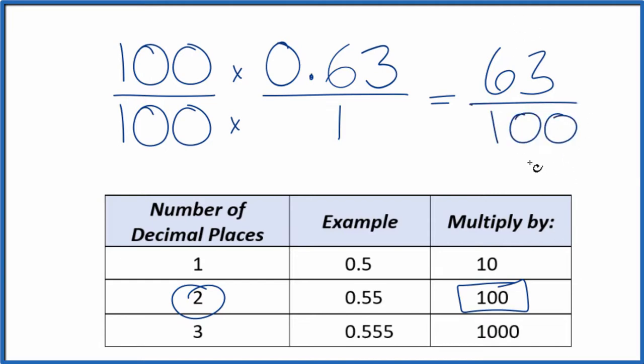And we have our fraction, 63 over 100. So the decimal 0.63 equals the fraction 63 over 100. And we can't simplify this or reduce it any further. If you divide 63 by 100, you'll get the decimal 0.63.